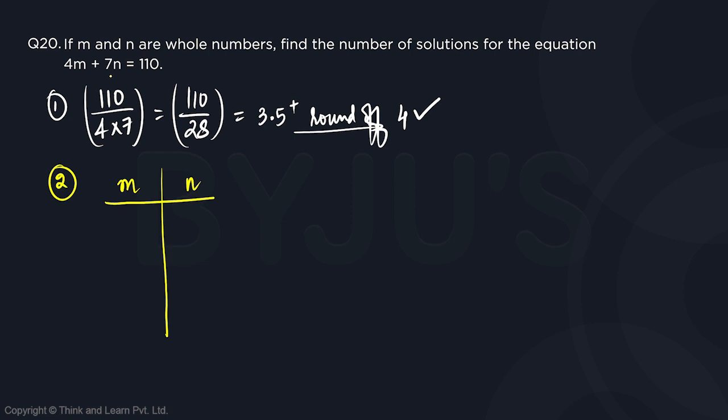So the nearest number, which is in the table of 7, should we do, or we can do a 4k table. Either will do. Suppose n is equal to 10. So that will be 70 and we need 110. So m is also equal to 10, right? Because 4 plus 7 is 11, 11 into 10 is 110.